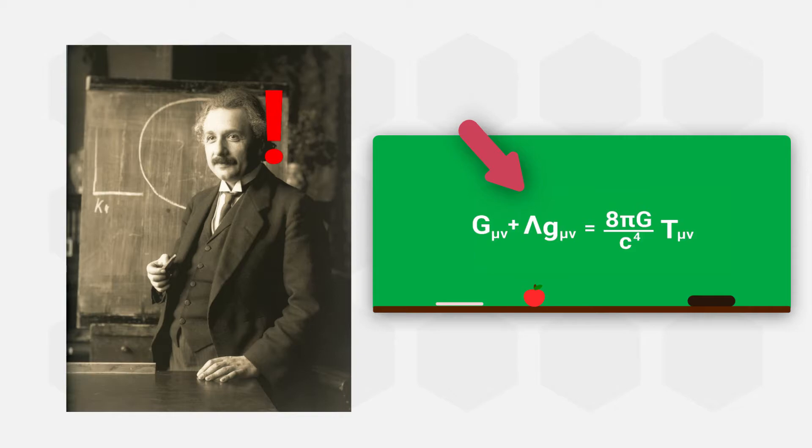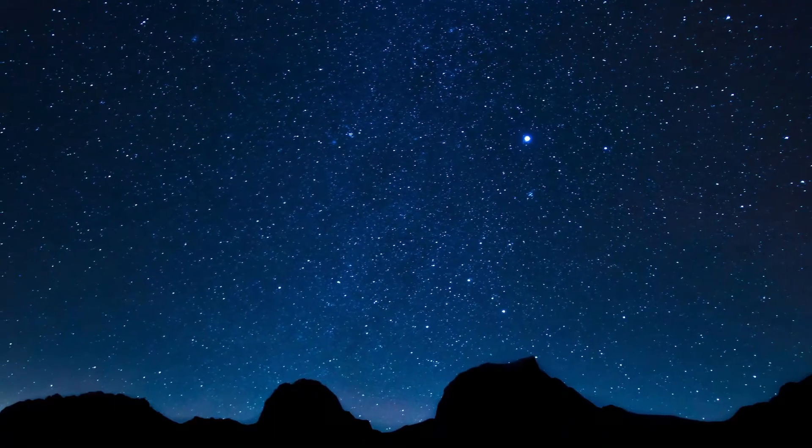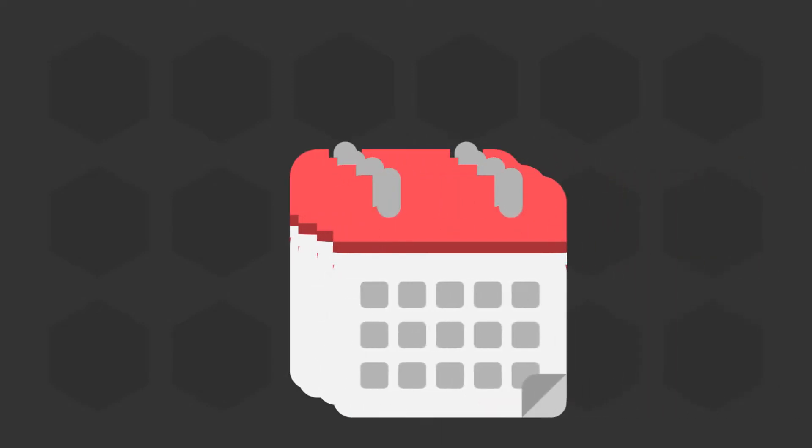Einstein was so shocked he had heart palpitations when he realized that his equation was correct. But for scientists to accept his theory, it had to be tested and proven that it was indeed true. This required investigating pictures of stars during a total solar eclipse. The closest one would take place four years after he had finalized his theory.